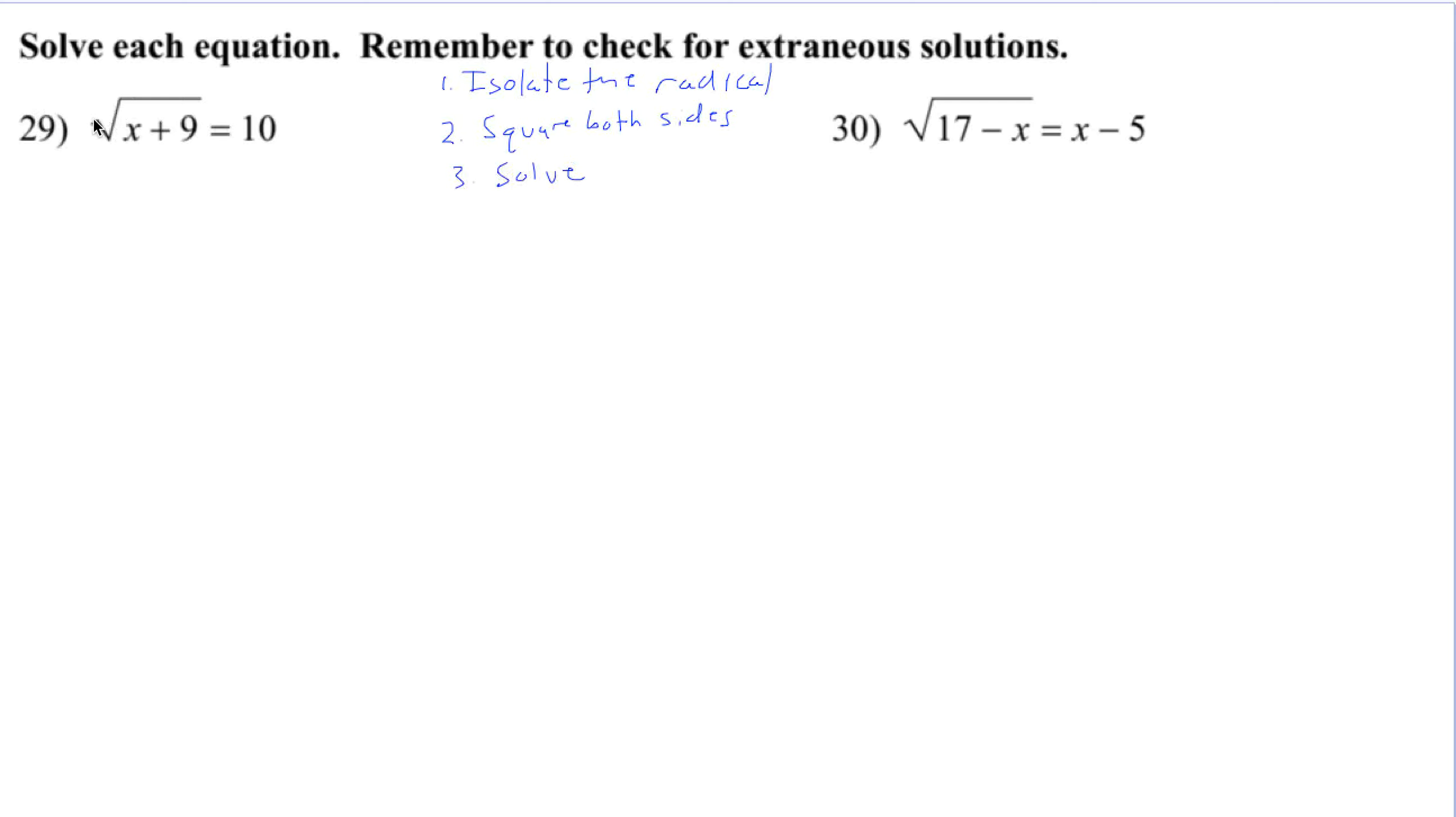So it's already isolated. So that's finished. We square both sides. That's why we have to check for extraneous solutions, because sometimes you can get solutions that don't work when you square both sides. So we square both sides because it will cancel the square root. So we just have x plus 9. 10 squared is 100.